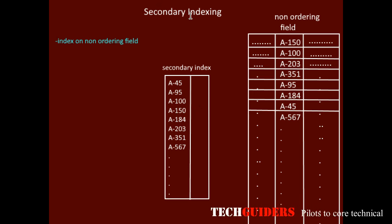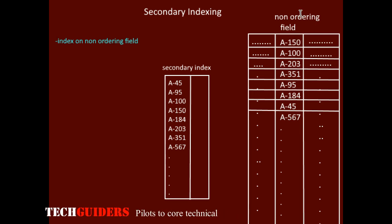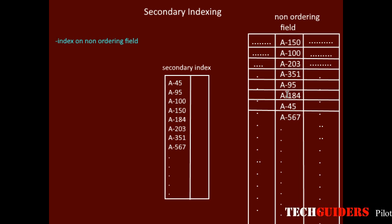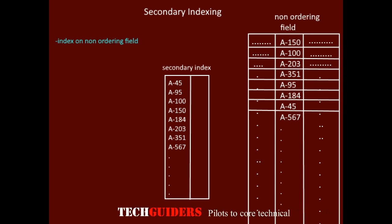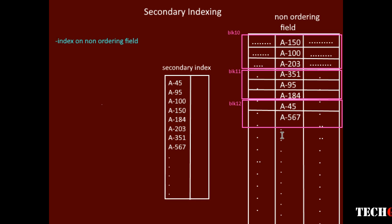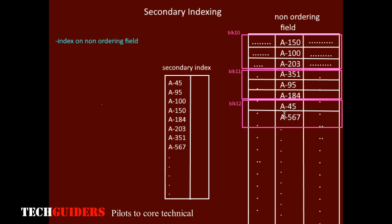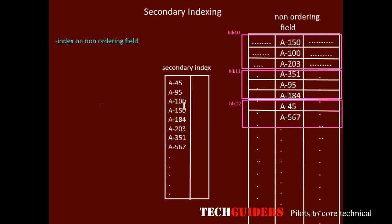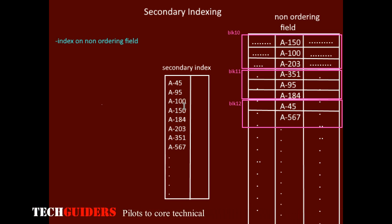A secondary index is an index which is created on some non-ordering field of the file, i.e., a field on which the file is not physically sorted on the disk. The records of this file are not physically sorted or ordered according to this field, hence this field is the non-ordering field of the file. The index is created with this non-ordering field as the index search key. Such an index is called the secondary index.